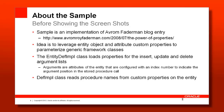The entity def impl class loads the properties. On the entity level and attribute level you can configure custom properties, which allow you to extend the number of attributes an entity has with your own properties. These attributes need to be read into the framework, and this is what the entity def impl class does. The entity def impl class is a singleton that helps describe the entity and set of attributes at runtime. This is why we call this approach more advanced — there is a second class that you have to build.